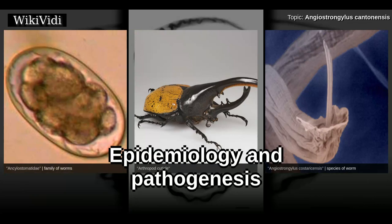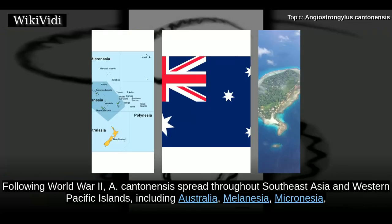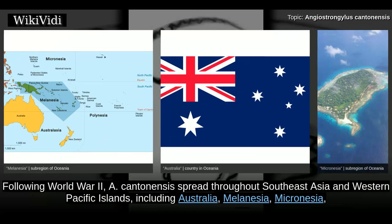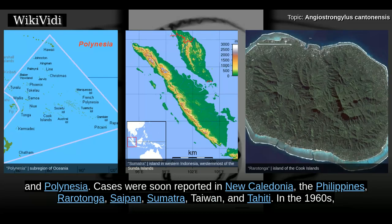Epidemiology and Pathogenesis. Following World War II, A. cantonensis spread throughout Southeast Asia and Western Pacific Islands, including Australia, Melanesia, Micronesia, and Polynesia. Cases were soon reported in New Caledonia, the Philippines, Rarotonga, Saipan, Sumatra, Taiwan, and Tahiti.